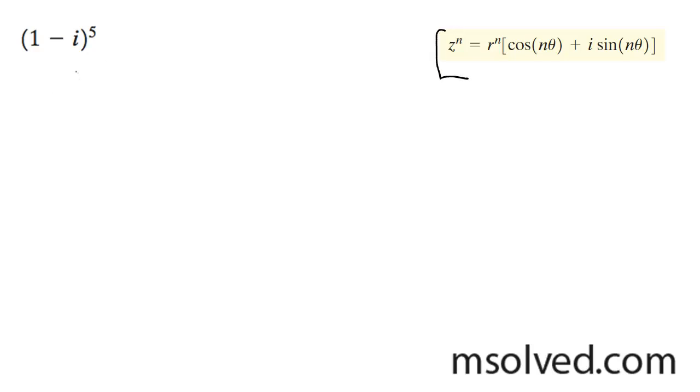So what I can do is I need to find r for this. Starting off with that, r is going to be equal to 1 squared. And even though it's negative i, you just still count it as 1 squared. Square root of this, which is equal to root 2.